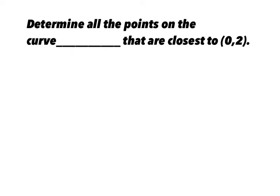We've got one more night of optimization, so I just titled this Optimization 3, and let's dive in. Determine all the points on the curve y equals x squared plus 1 that are closest to the point 0, 2.